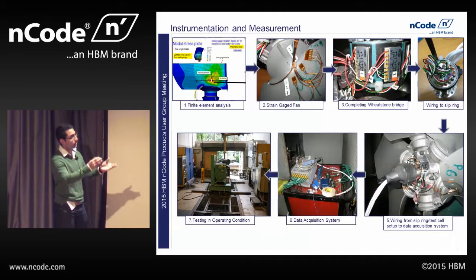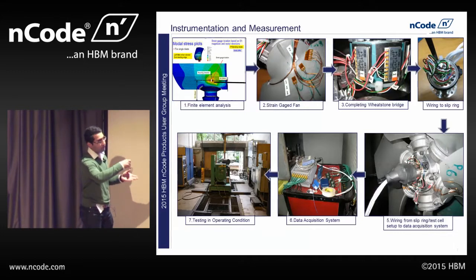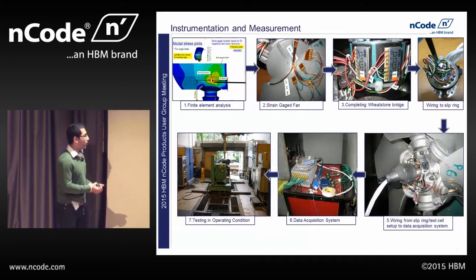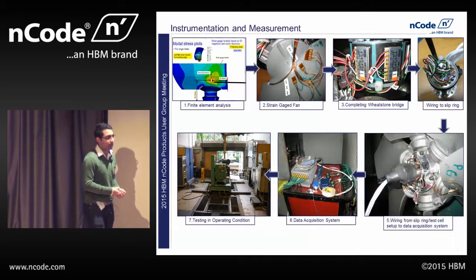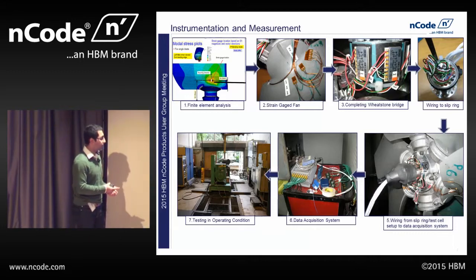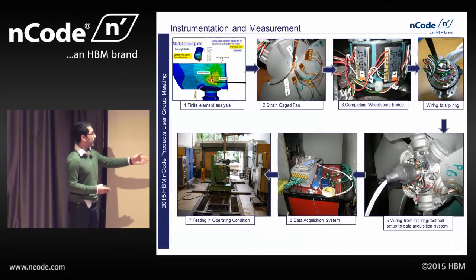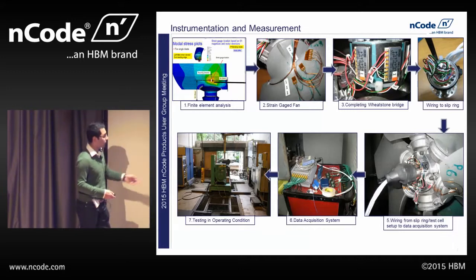So the wires coming out of the Wheatstone bridge go to the slip ring, and then all the instrumentation from the slip ring goes into the data acquisition system. We use the HBM SOMAT for the data acquisition system — it's a pretty rugged application, because when we take road load data it goes through a lot of loads that a DAQ system is not ideally supposed to handle. But at the end of the day, we take the data that we want to take.